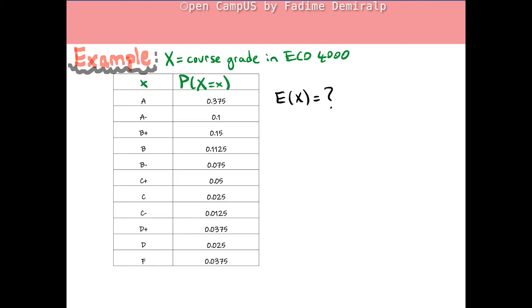For the expected value calculation, the GPA scale at the college I teach: this class applies A means 4.0, A minus 3.7. Lastly, F means 0.0. Let's implement the formula to calculate the expected value: 4 times 0.375 plus 3.7 times 0.1...